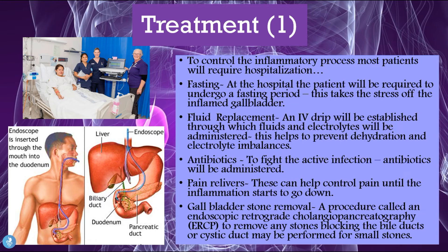Looking at this picture, we see what the ERCP process looks like. An endoscope is inserted through the mouth into the duodenum, and from there it can enter into the pancreas as well as the gallbladder through the tiny ducts. It can be inserted into these ducts and remove any small obstructions. If the stone is small enough, we can use ERCP to remove it.